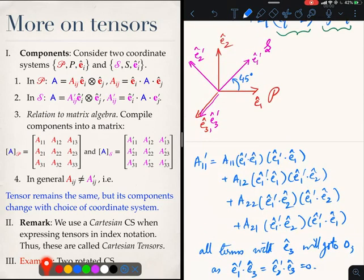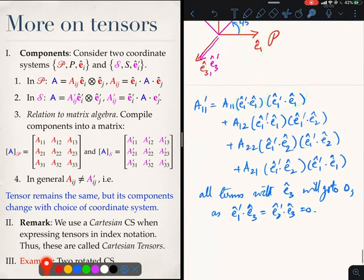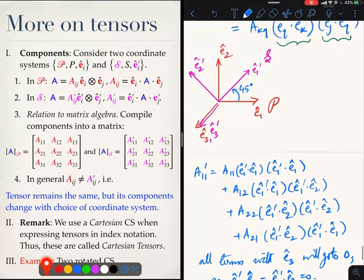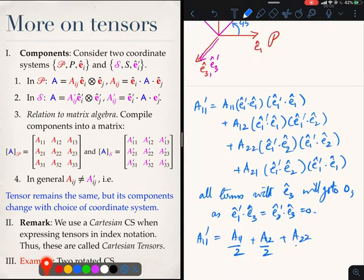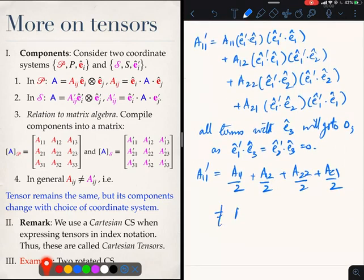The first one is E1 prime dot E1, these two, 1 by root 2, so I get A11 prime will be A11 by 2. The next term is E1 prime dot E1, that is 1 by root 2, E1 prime dot E2, that is also 1 by root 2. So we will get plus A12 by 2 plus A22 by 2 plus A21 by 2, which is not equal to A11. And that is what we will set out to prove.